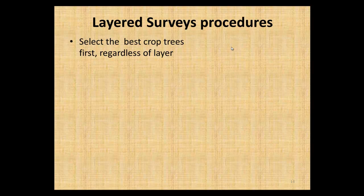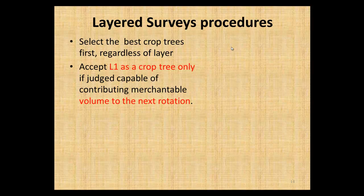For the survey procedure, you select the best crop trees first regardless of the layer. You start in your sweep - if it's a layer one it's a layer one, if it's a layer two or three that's the way it goes. Select the one that's going to be there at rotation age, as long as you have clarity around when that rotation age is or what the management regime is. Accept a layer one as a crop tree only if it's capable of contributing to merchantable volume to the next rotation, and that gets reflected in the damage criteria recommended for these stand types.